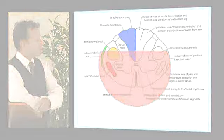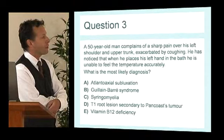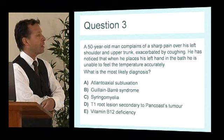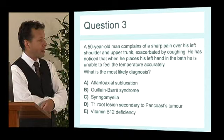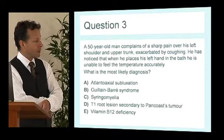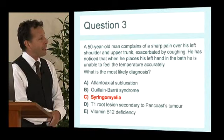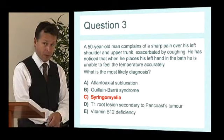Question three. A 50-year-old man complains of a sharp pain over the left shoulder and upper trunk, exacerbated by coughing. He's noticed that when he places his left hand in the bath, he's unable to feel the temperature accurately. What's the most likely diagnosis? The clue is that when he places his hand in the bath, he can't feel the temperature, implying other sensation is preserved. Temperature sensation is spinothalamic, so we're looking for something within the spinal cord that selectively affects spinothalamic sensation.